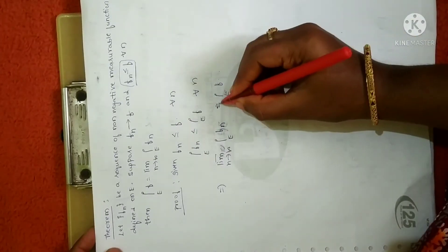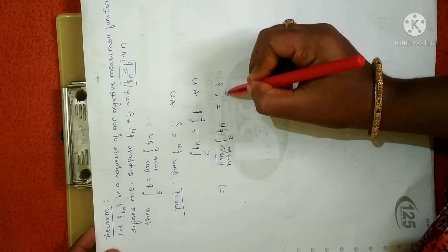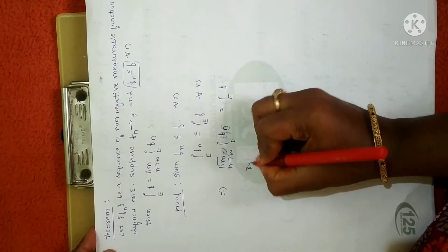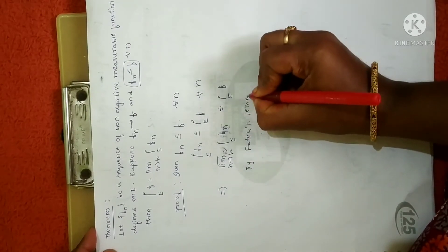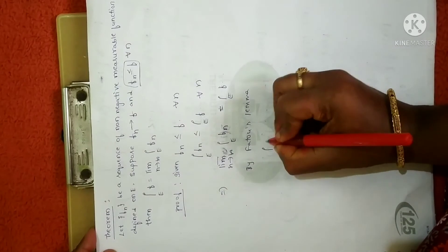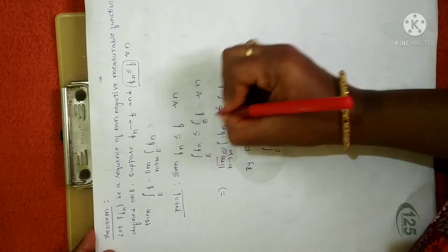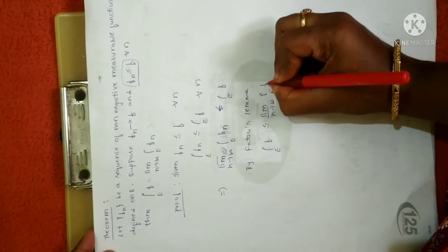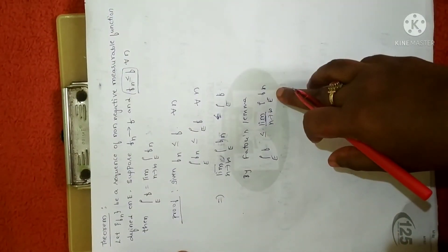When you take limit supremum as n tends to infinity, I can write this as the integral over E of f. Now again by Fatou's lemma, as I have already proved, the statement says: the integral over E of f is less than or equal to the limit infimum as n tends to infinity of the integral over E of fn. This is the statement of Fatou's lemma.